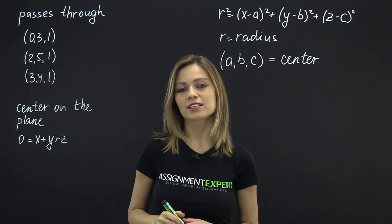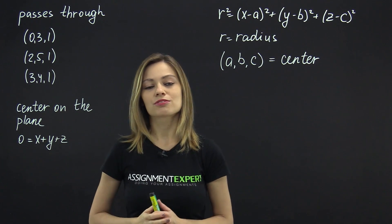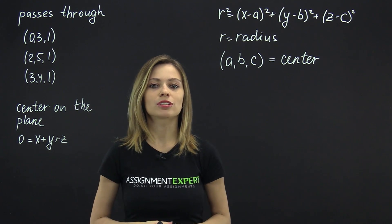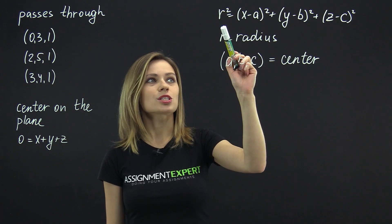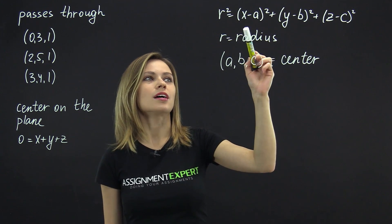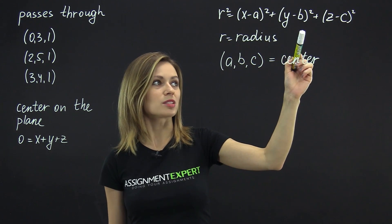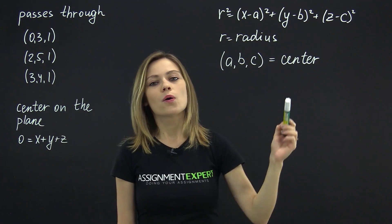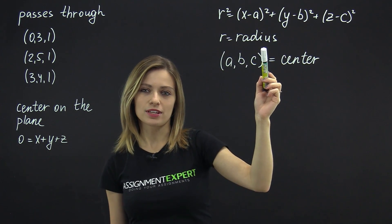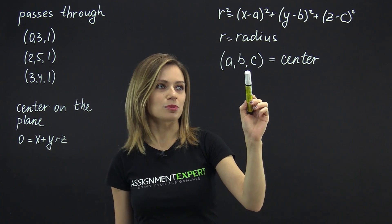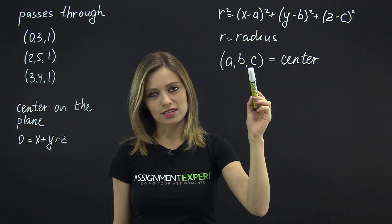So, let's find the equation of this sphere. First, let's recall that the general equation of the sphere goes like this: r squared equals (x minus a) squared plus (y minus b) squared plus (z minus c) squared, where r is the sphere's radius and a, b, c are the coordinates of the sphere's center.